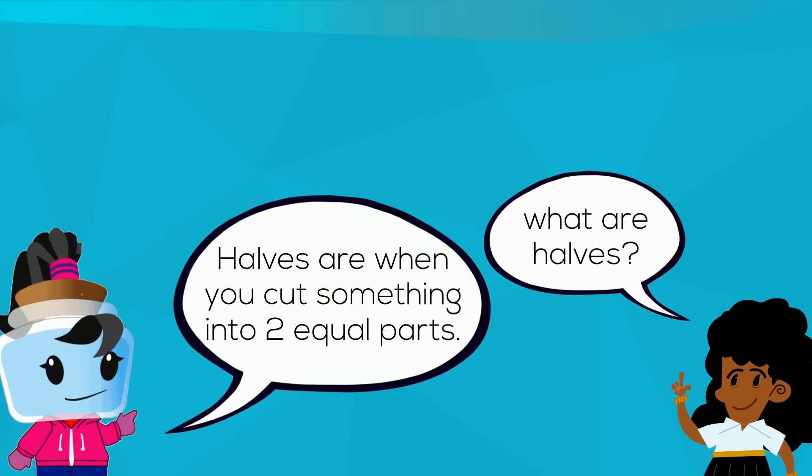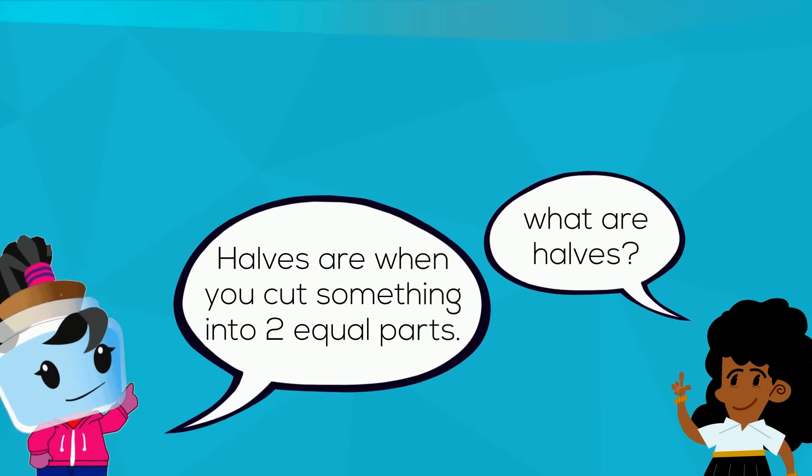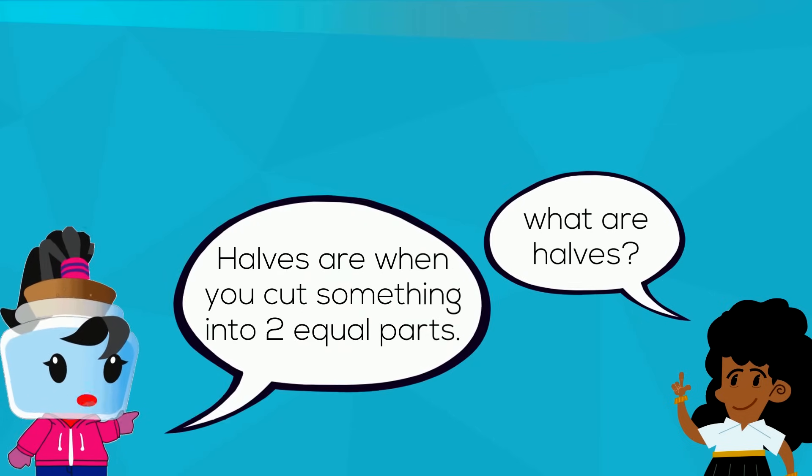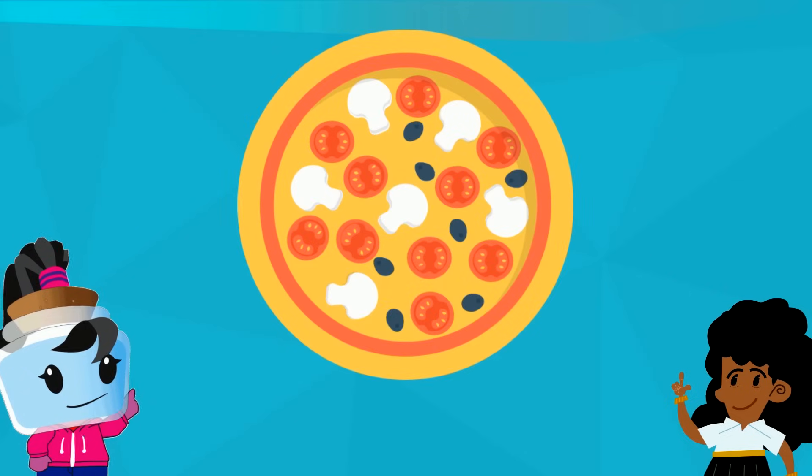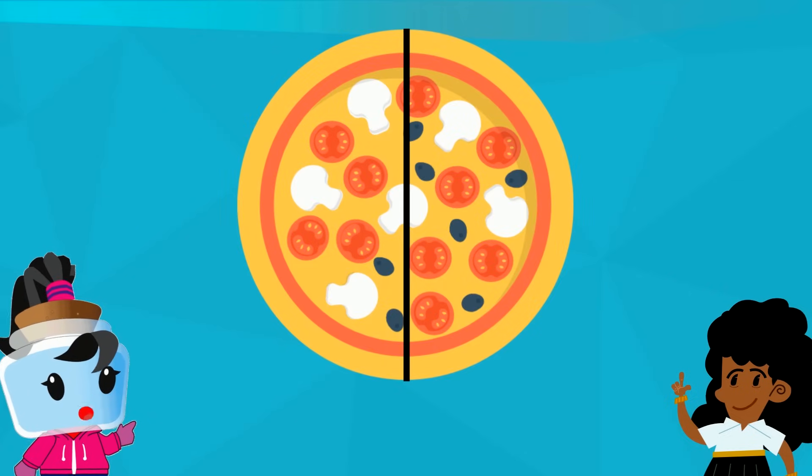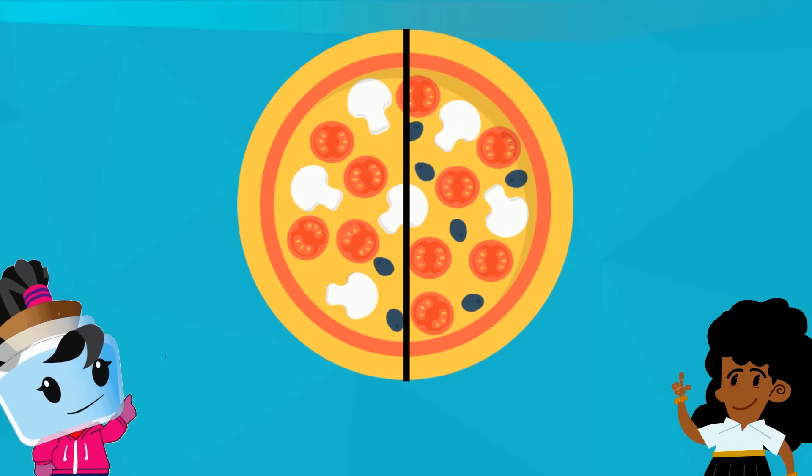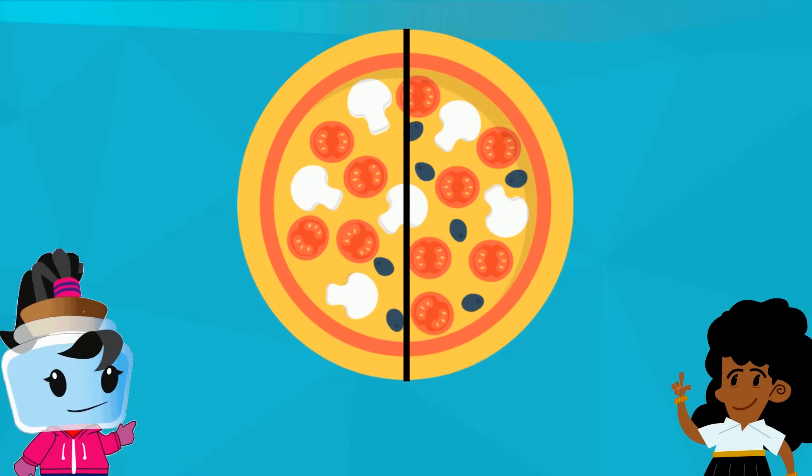When you cut something into two equal parts, these two parts are called halves. Look! Sarah gets it now. She's slicing the first pizza into two equal parts.